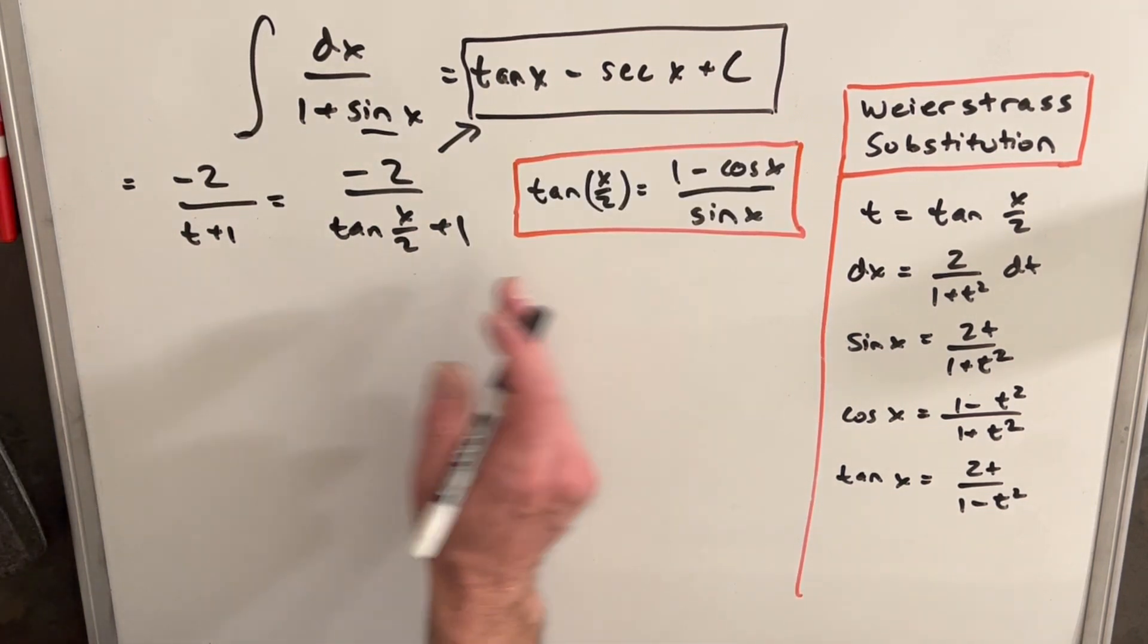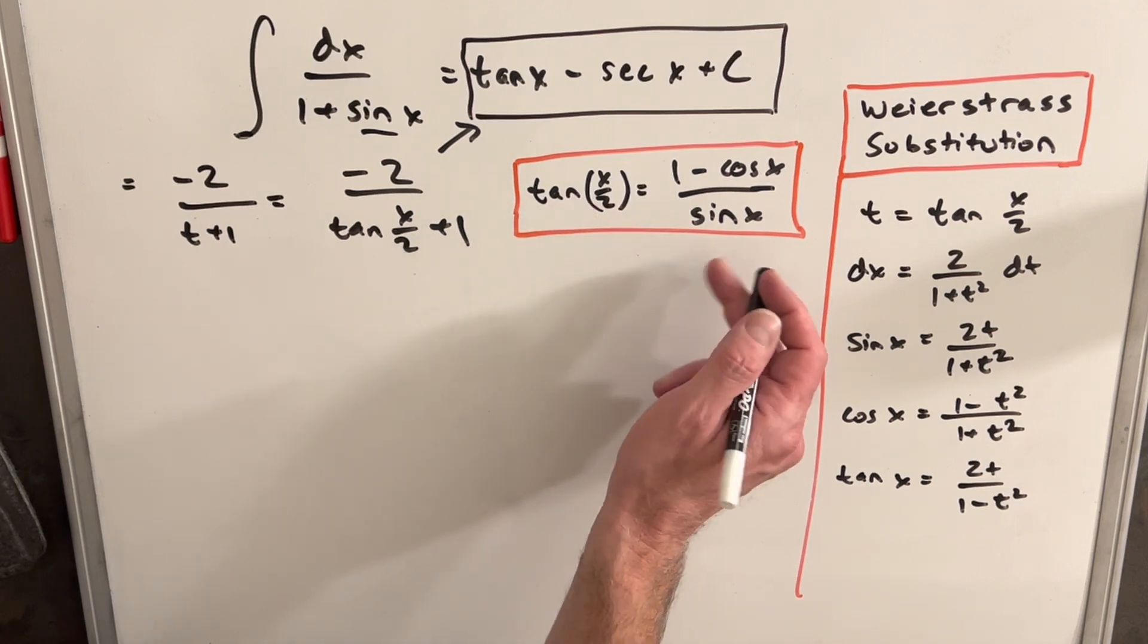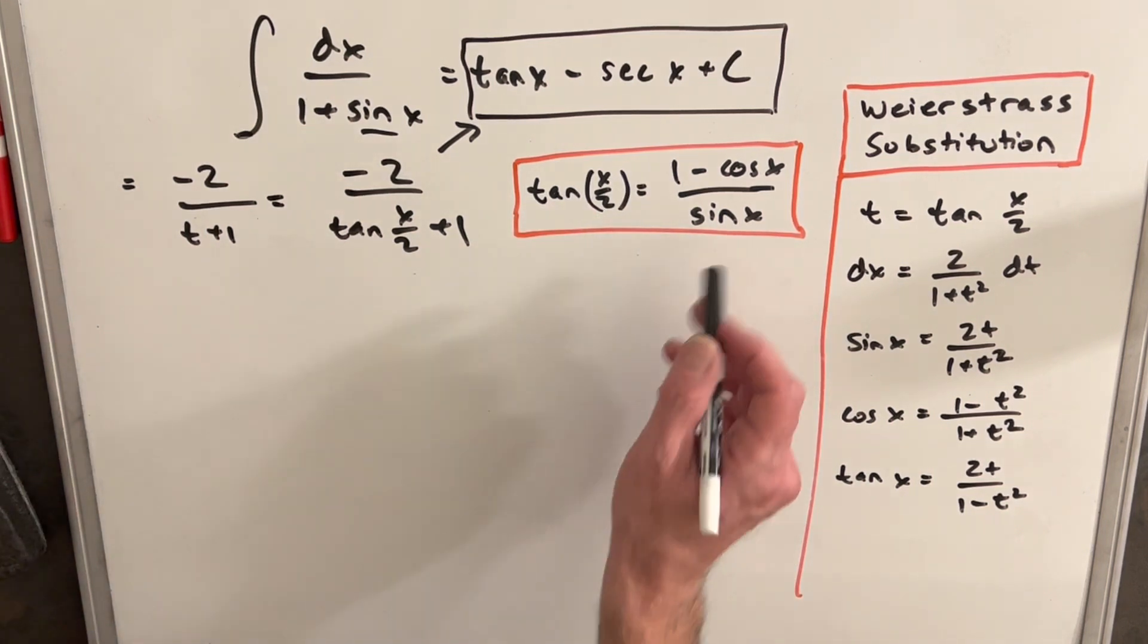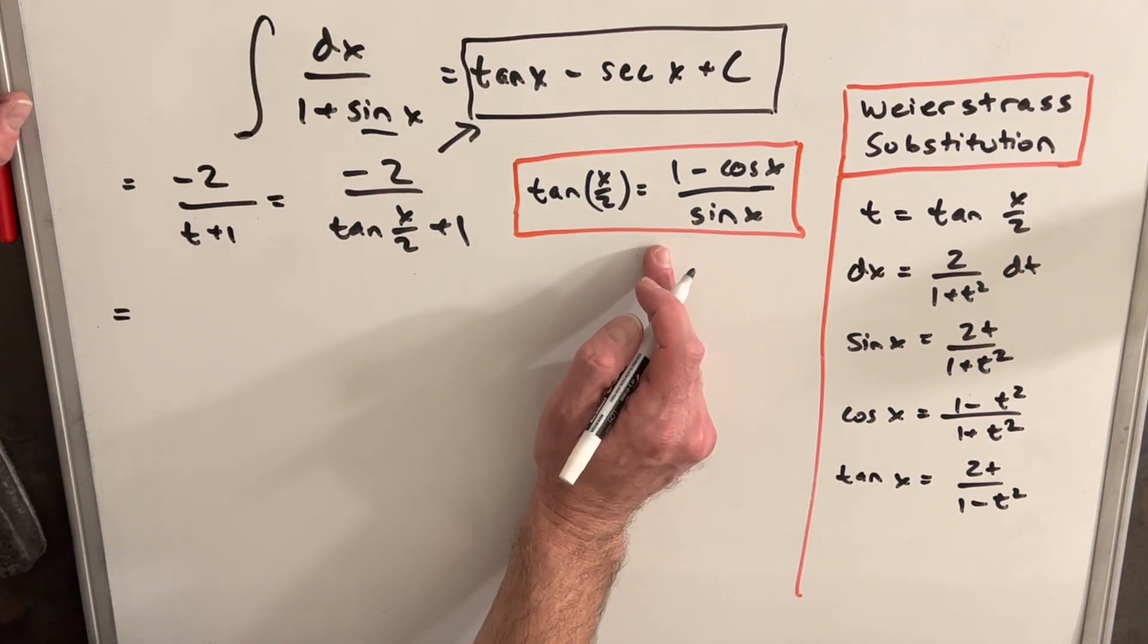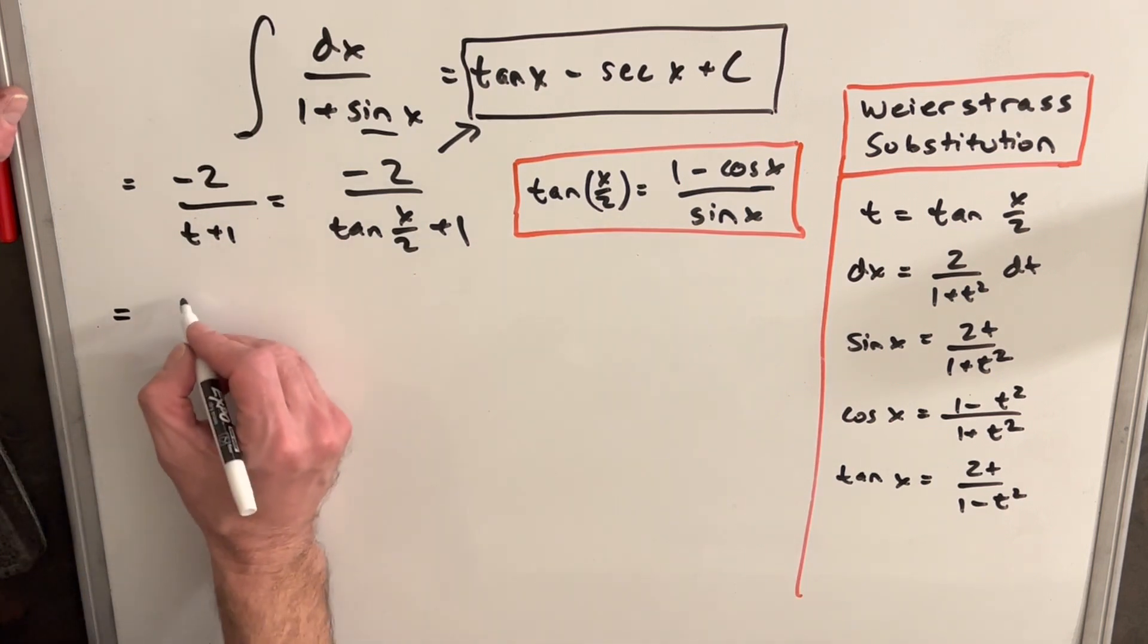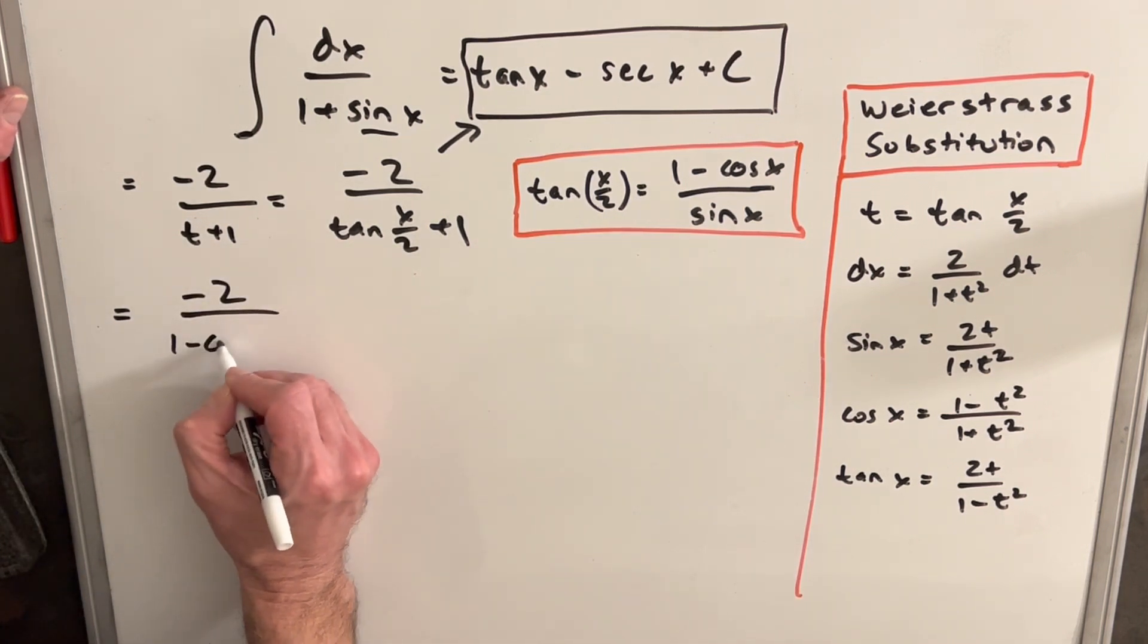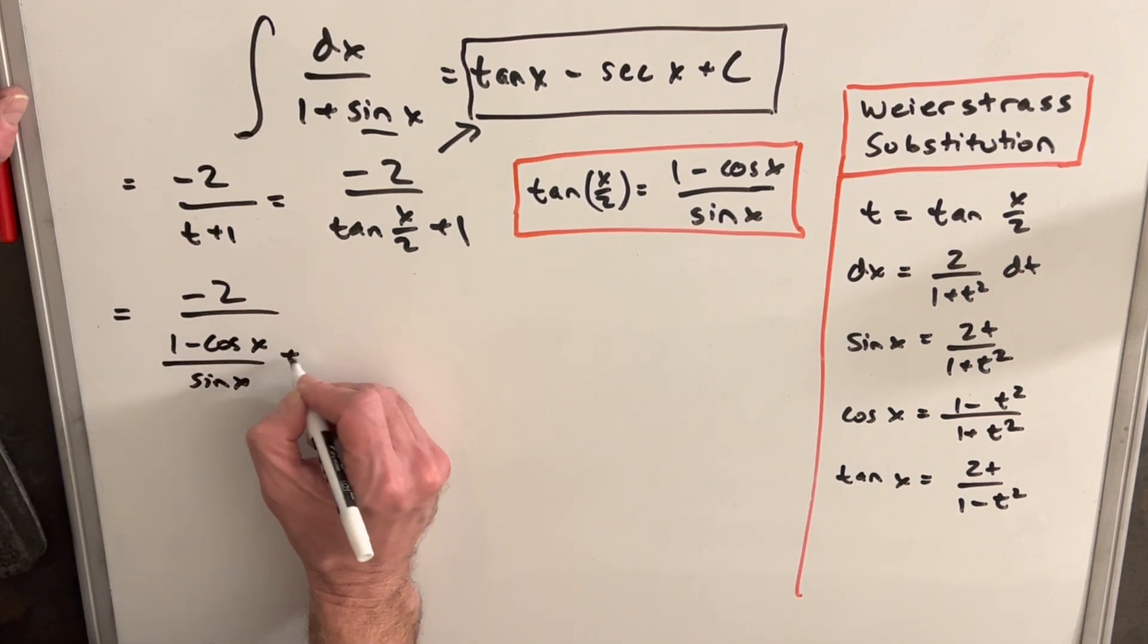So what we can do to start is we have this identity over here for the half angle of tangent to get it back into x. So we'll use that and plug that in. I derived this in another video not too long back. So let me see if I can get a link to that as well. But we're going to have minus two over one minus cos x over sine x plus one.